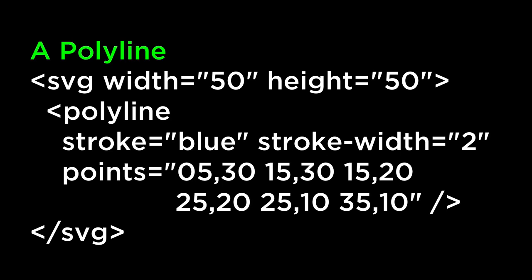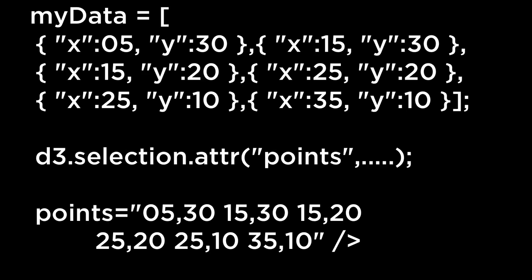D3 is very good at adding attributes and their values to DOM tags. So in both cases, it is very easy for D3 to add in the width, height, stroke, and stroke width values. D3 can also add in the points and the points value. However, if we look at the list of points, it looks like it is cumbersome to generate a string which contains the points in the correct format. Somehow we have to convert the my data array into a string that contains the list of points such that when D3 attaches it to the points attribute, it looks like SVG would expect it. We could write functionality to do this, but luckily D3 does that for us through SVG paths.